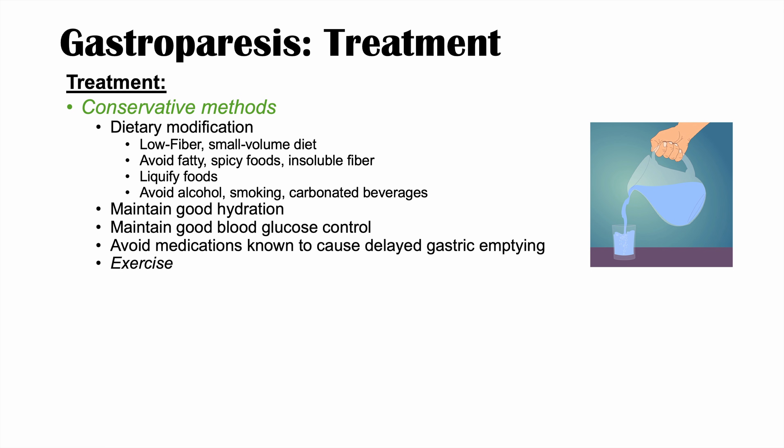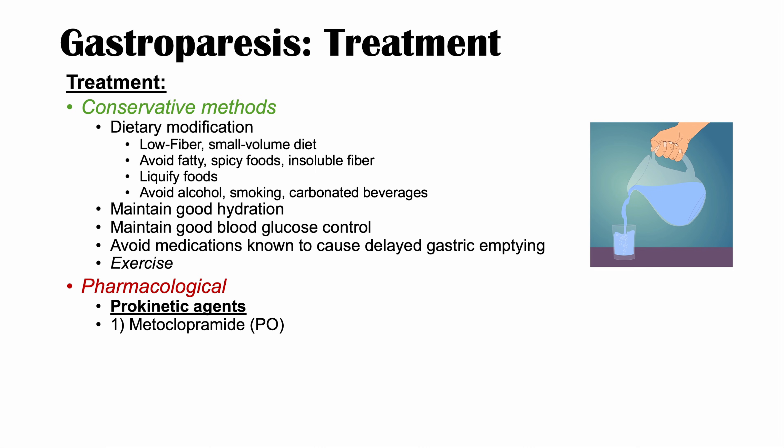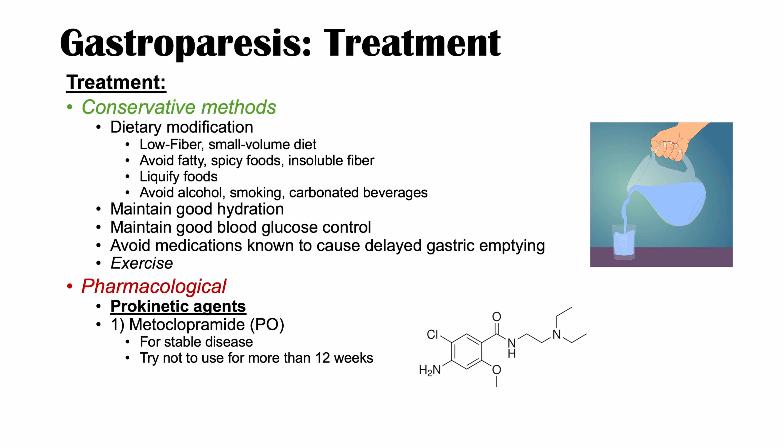If conservative methods don't work, we move on to pharmacological methods. We use prokinetic agents like metoclopramide, which is first line. It is taken by mouth (PO) and used for stable disease. You want to avoid using metoclopramide for more than 12 weeks unless the benefits outweigh the risks, as there is a risk of tardive dyskinesia and extrapyramidal side effects with longer use.